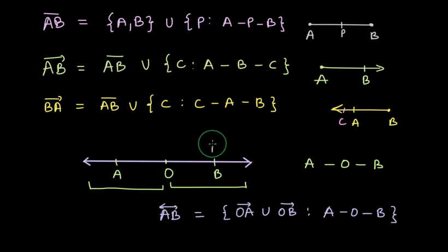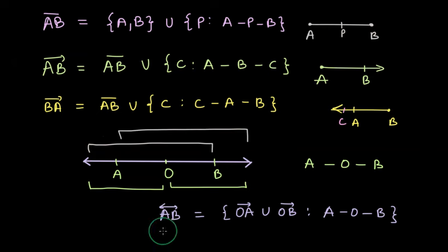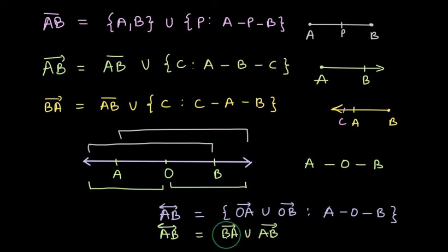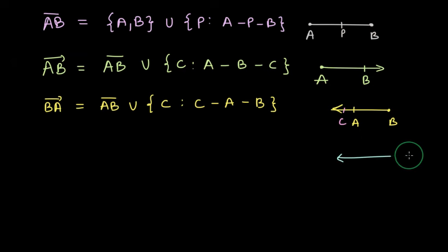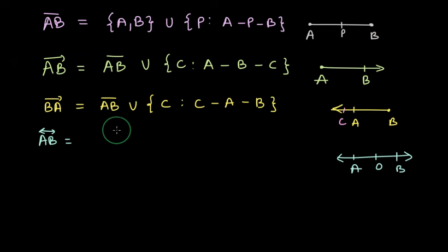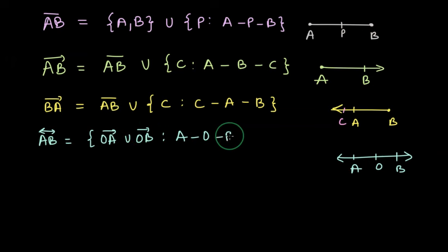Another way is to write line AB as the union of ray BA and ray AB. That just ensures that the set of points extends before A as well as after B. Let us summarize: draw a line AB with point O in between. Line AB can be described as the union of ray OA and ray OB provided point O is between A and B. Or equivalently, the union of ray BA and ray AB.